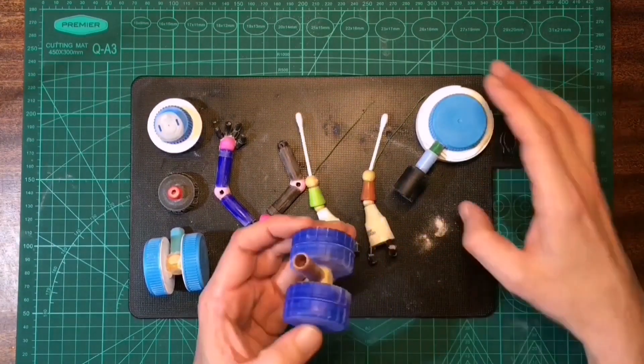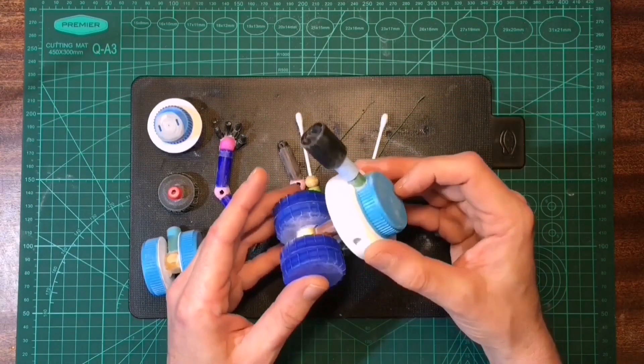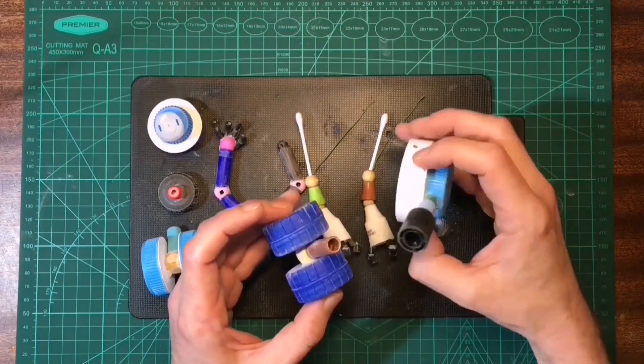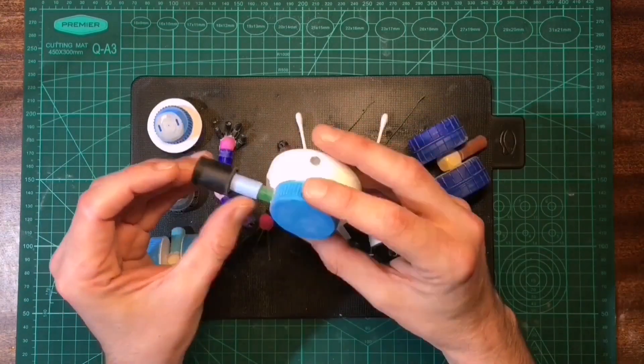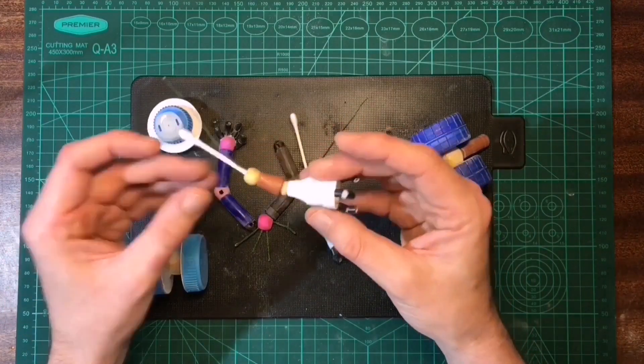Alrighty, got a wee bit more assembled here. This guy's pretty much good to go. Body just needs to glue onto the wheels, something like that. Got the barrel glued on, no problems. Glued on okay, plenty of baking powder. And the arms finished up.